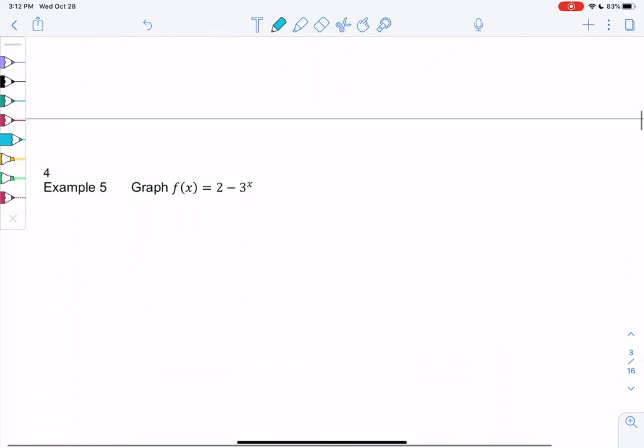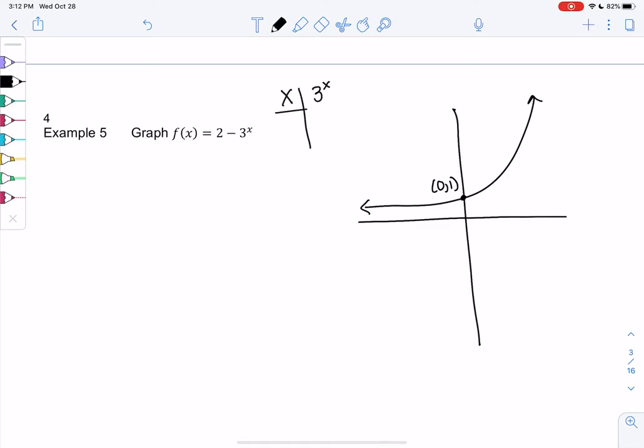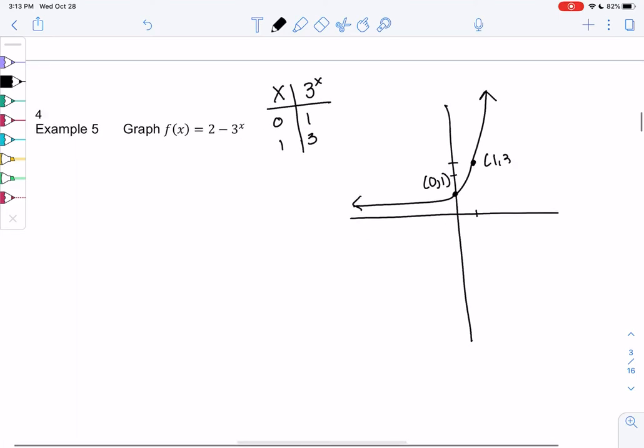Let's try example 5. So we have f of x is 2 minus 3 to the x. So our base graph will be 3 to the x. It looks basically the same as 2 to the x. That's why I'm going to just add two points. So we have 0, 1. And then we would have 1, 3. Because if I plug in 1, I just get a 3. So I'm going to fix that a little. There we go. Just to get the steepness a little bit more accurate.